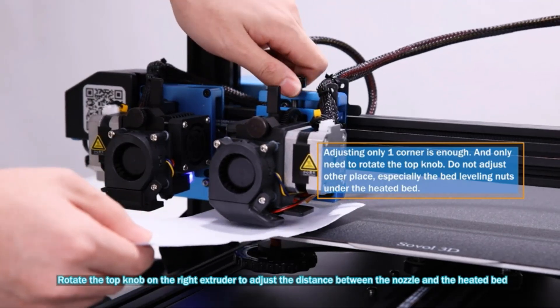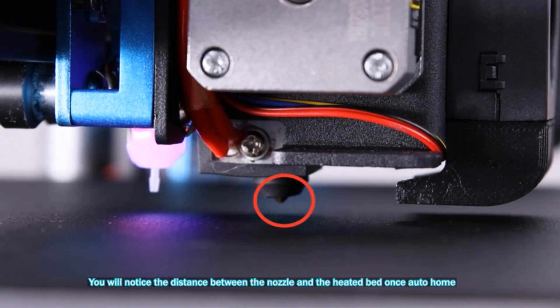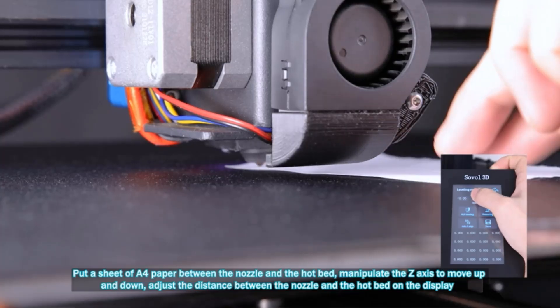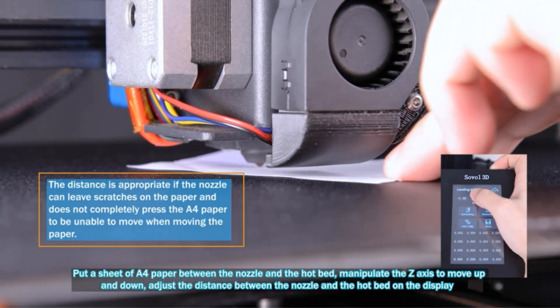The extruder's metal gears ensure smooth filament feeding for consistent printing performance. The A20M boasts a full metal body and comes 95% pre-assembled, making it stable, durable, and quick to set up.